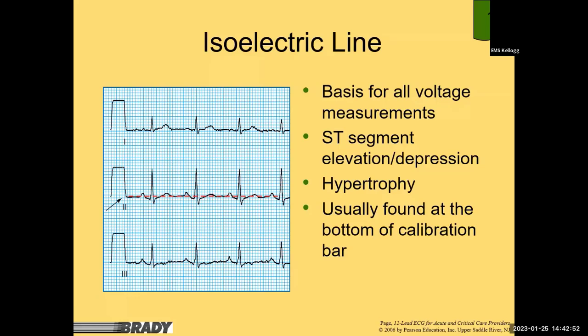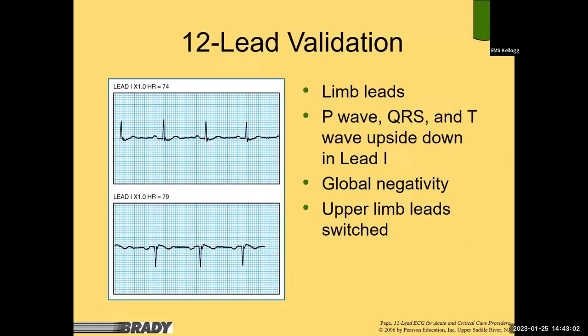You can see the calibration bar where it bottoms out repeatedly — that boxy section at the beginning of the strip. To validate your 12-lead, make sure leads are properly placed — limb leads should go on the limbs.